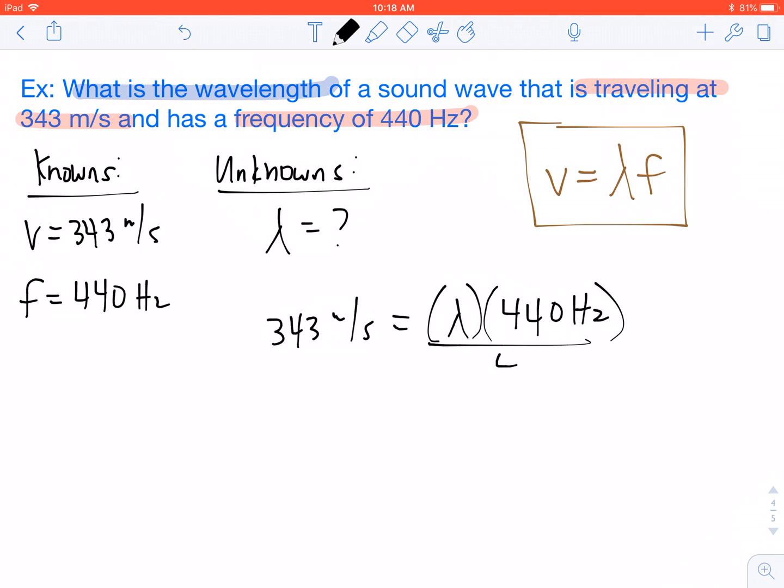We will divide by 440 on both sides. When we do the math, our wavelength comes out to be 0.78 meters.